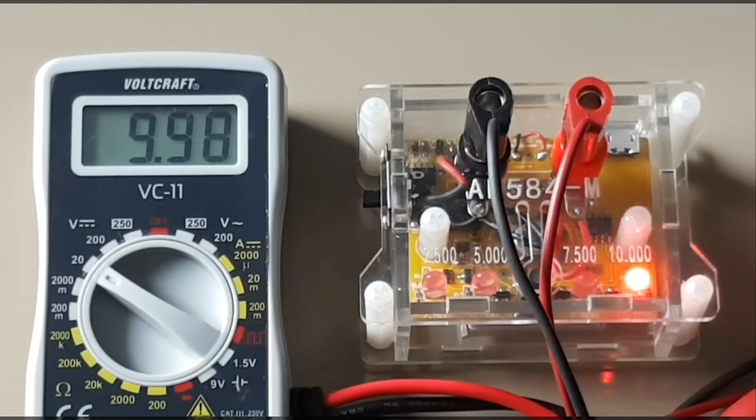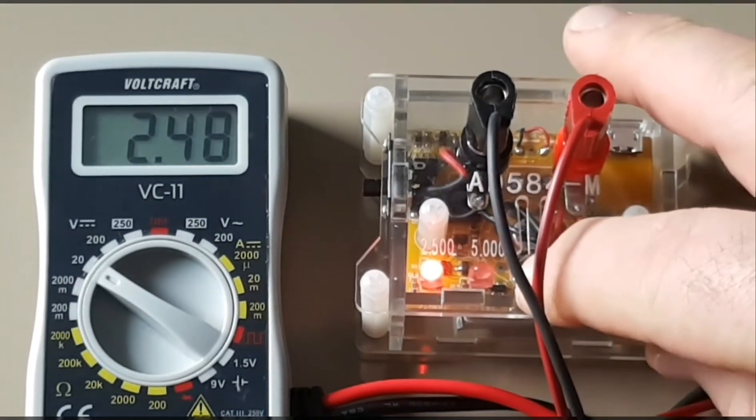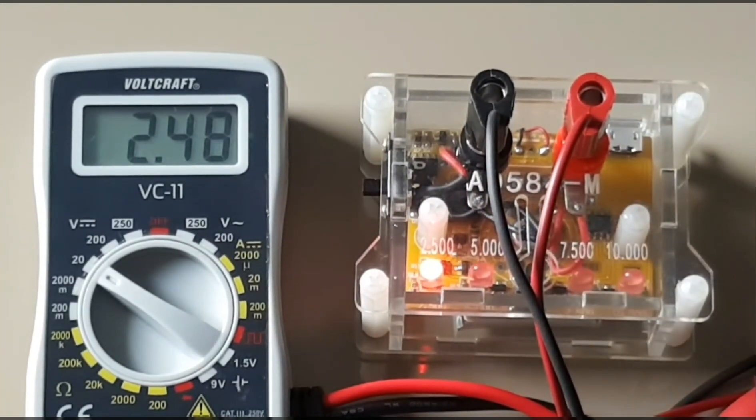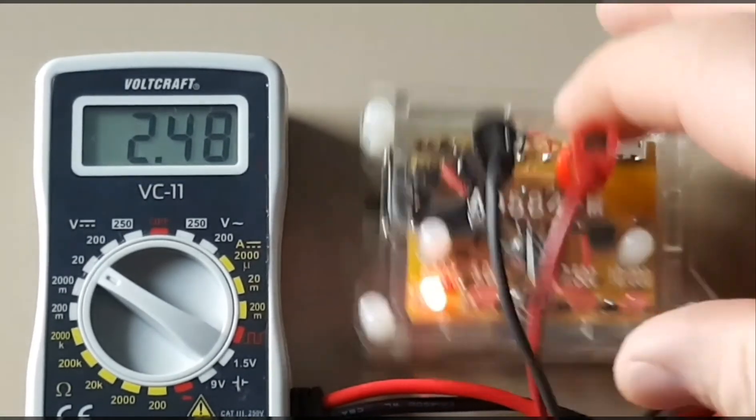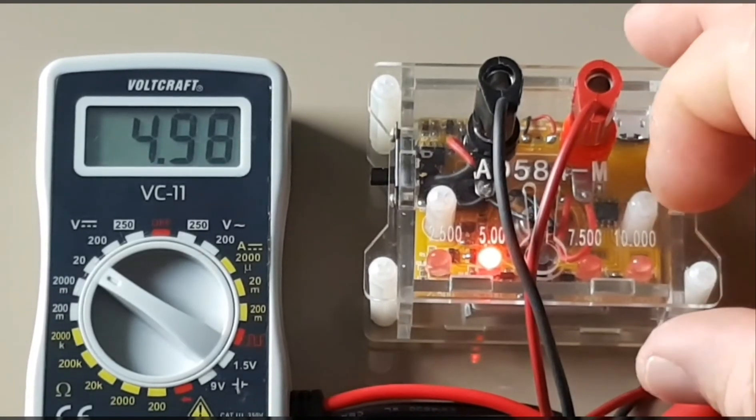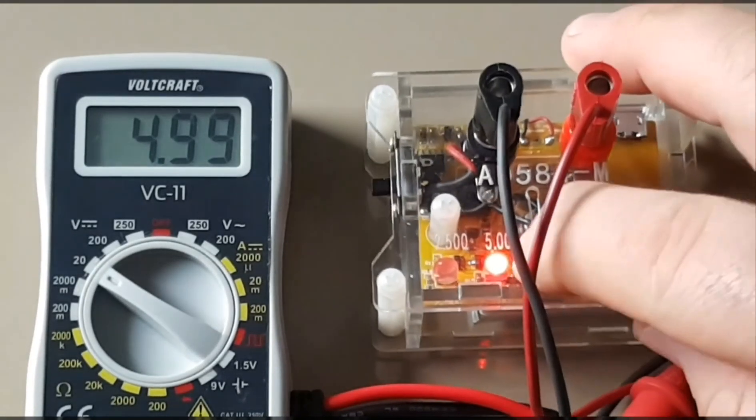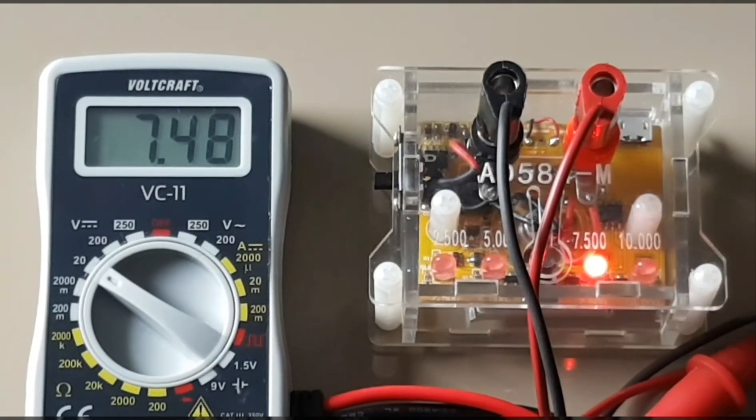We'll take a quick look. Right now we're at the 10 volt setting according to the 584, and the VC11 is showing 9.98 volts, fluttering back and forth. Heading down to 2.5 volts, the VC11 is showing 2.48. Taking it up to 5 volt, VC11 is coming in at 498. And finally at 7.5 volts, the VC11 is showing 7.48.